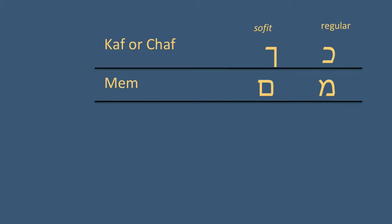Next, the letter Mem that we have already learned. When Mem appears as the last letter in a word, it takes on a unique form. You want to make sure not to confuse the Mem Sofit with the letter Samech — they look quite similar, except the Samech has more rounded corners so it looks a little more circular. Then we have the letter Nun that we've learned. When Nun comes at the end of a word, it's the Nun Sofit, which almost looks like a Vav that has been extended down below the line.